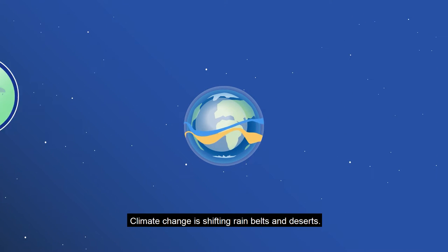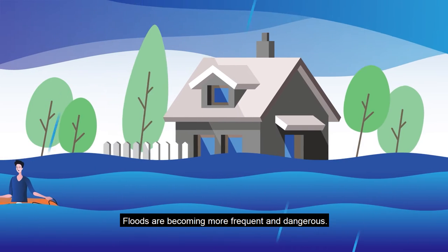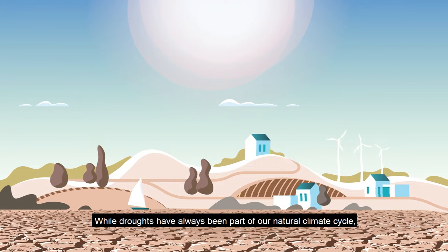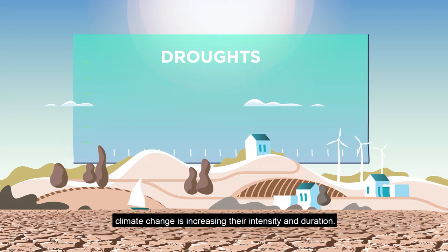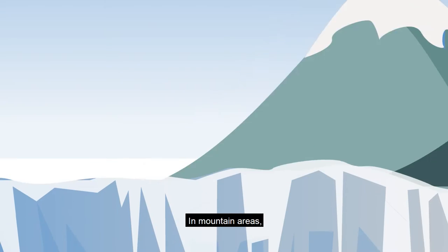Climate change is shifting rain belts and deserts. Floods are becoming more frequent and dangerous. While droughts have always been part of our natural climate cycle, climate change is increasing their intensity and duration. In mountain areas...